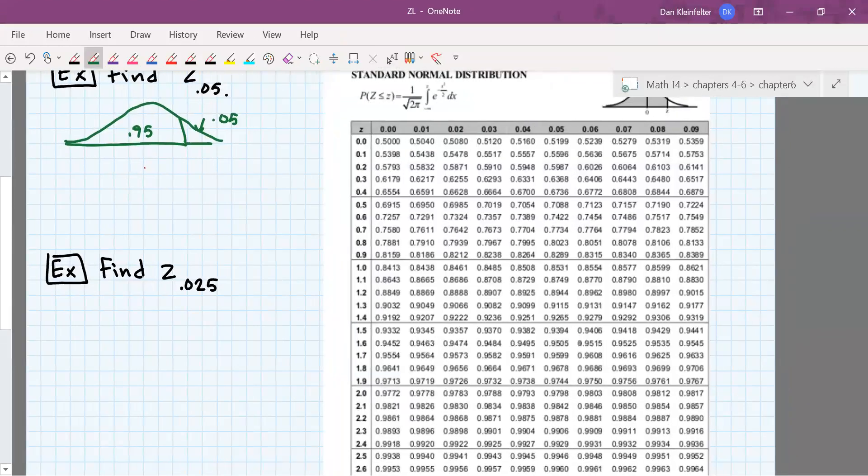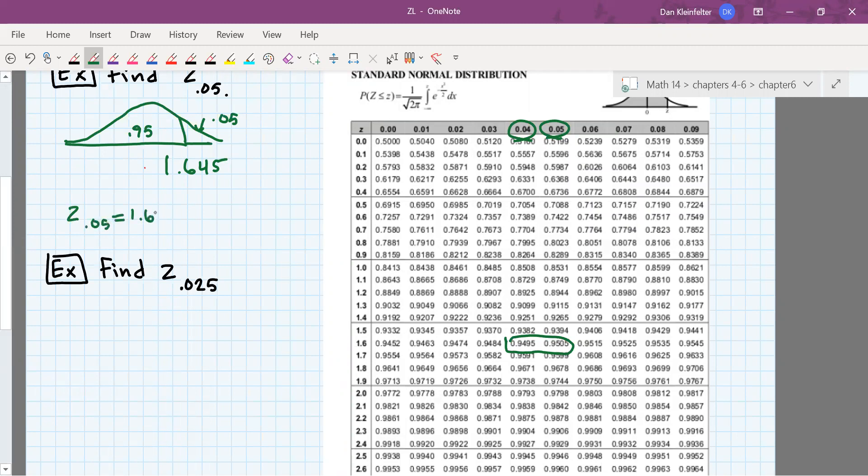So looking in the body of the table, 0.95 is right in between 0.9495 and 0.9505. Now you could take the higher of the two, but another thing that's customary to do is to take the average of these. So halfway between 1.64 and 1.65 would be 1.645. So z.05 is 1.645.